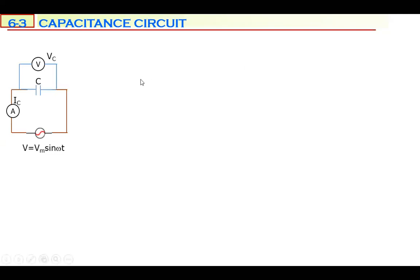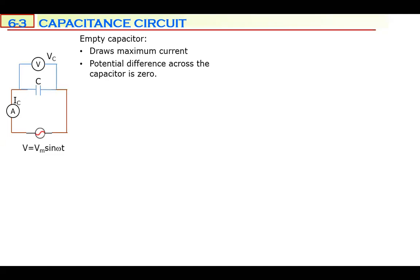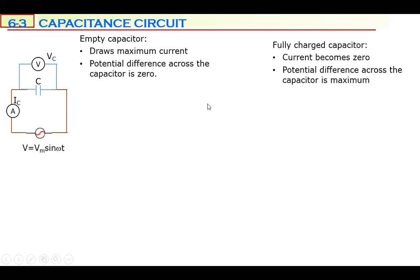Next is pure capacitance. A capacitor stores electrical energy or charge. An empty capacitor draws maximum current — because there is no polarization between the plates, potential difference is zero. When the capacitor is fully charged, there is no space for other electrons to move, so current becomes zero. One plate is positively charged, the other negatively charged, and potential difference becomes maximum.